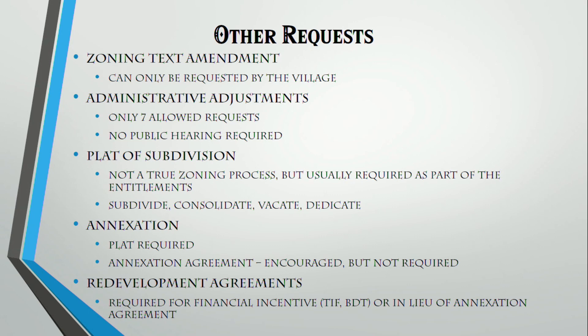There are other requests that go through the entitlement process that aren't specifically zoning. A zoning text amendment is when we propose to change the actual code — this can only be requested by the village, not a property owner. An administrative adjustment is like a junior variation: there are only seven particular requests allowed, there is no public hearing, it's staff-led, and the director has final determination. These cover things like less than 10% of a side yard setback.